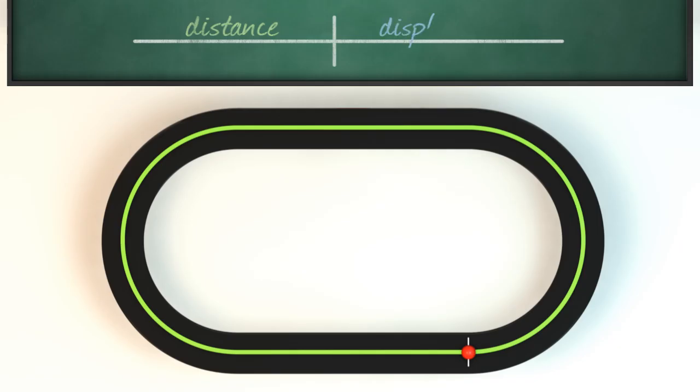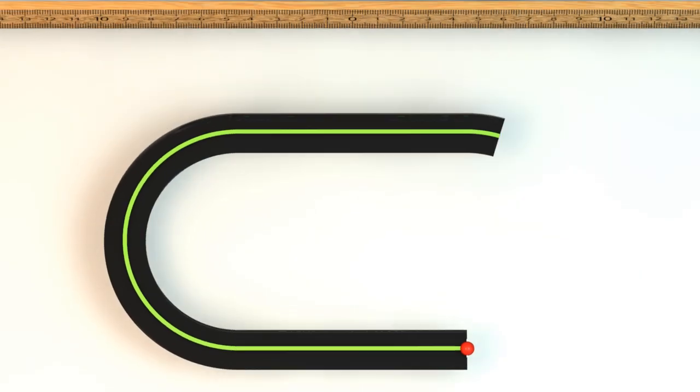After the race the runner has traveled a distance of one lap, or 400 meters. The displacement of the runner however is zero, because the runner ended up at the exact same position as it started at. So there is no change in position after one lap.